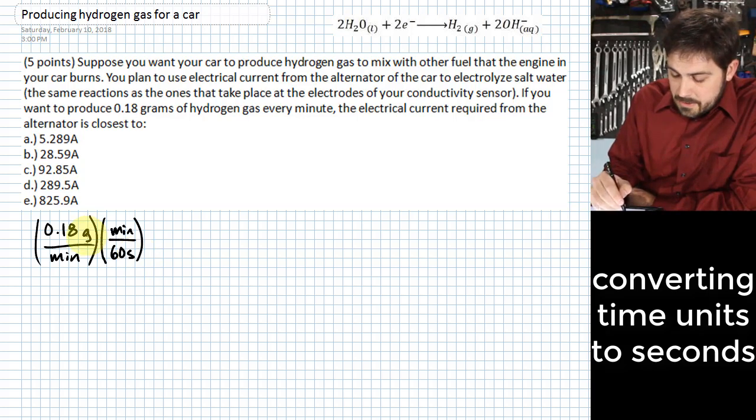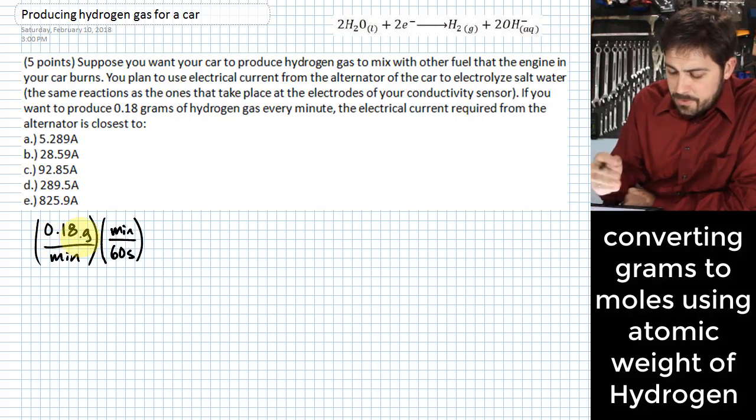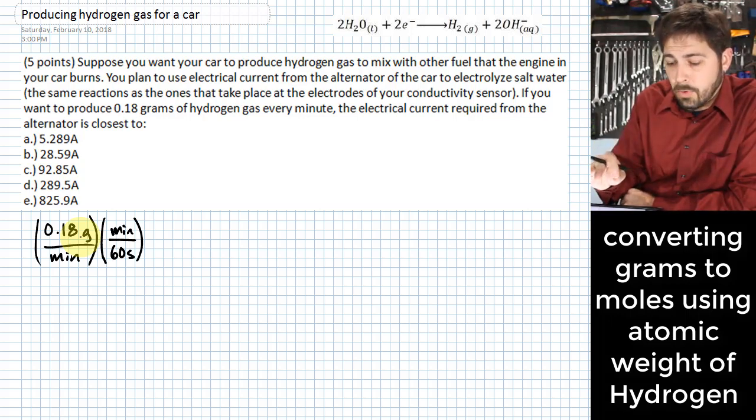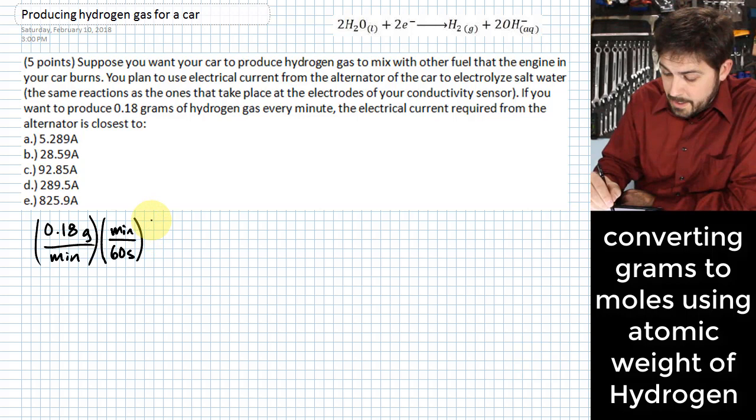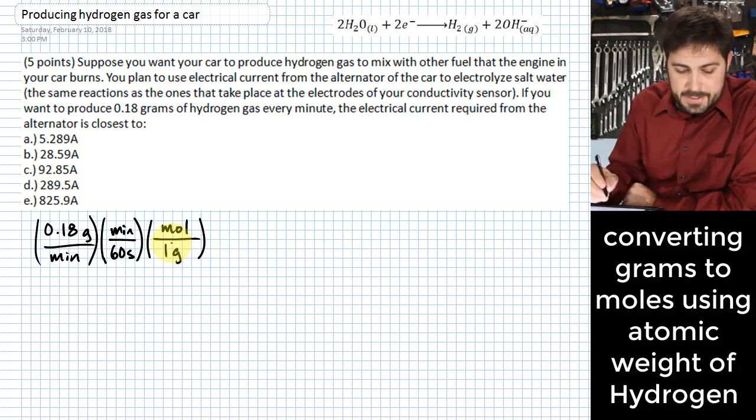The next thing is we need to know how to get to moles for this and for hydrogen. Hydrogen is interesting because it is just a value of one gram per mole. So we'll put that in here like this where we actually put the mole in the numerator and the gram in the denominator.